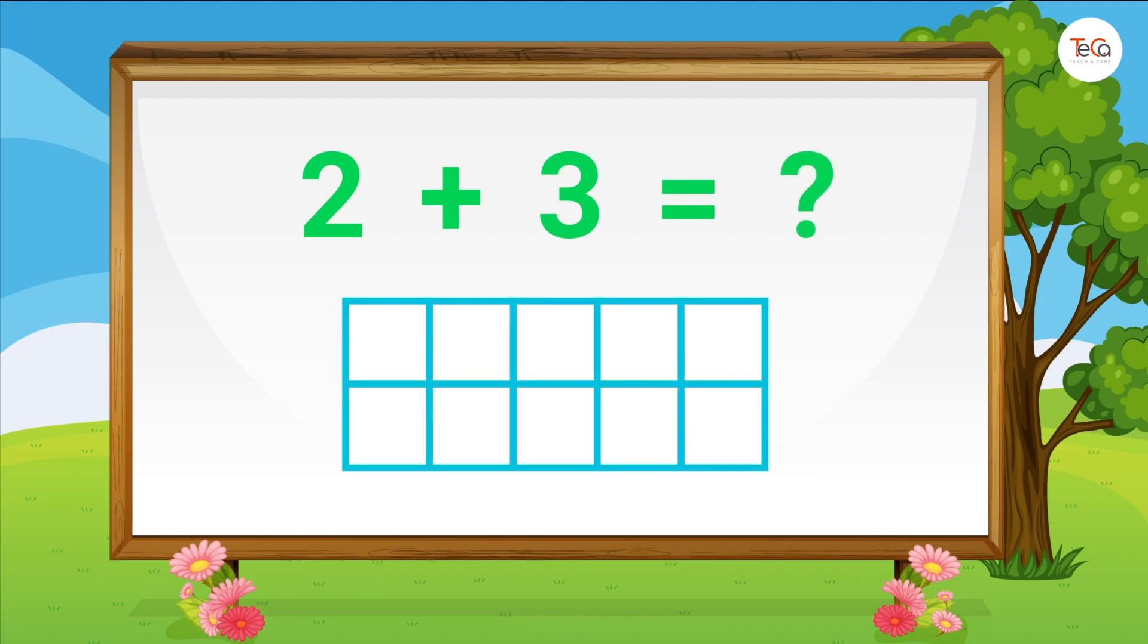If you have to add, for example, 2 plus 3, then you can use a 10 frame to add like this. Draw 2 dots then 3 dots. Then count all the dots to find the sum. Here we have 1, 2, 3, 4, 5. 5 dots in total. Therefore 2 plus 3 equals 5.